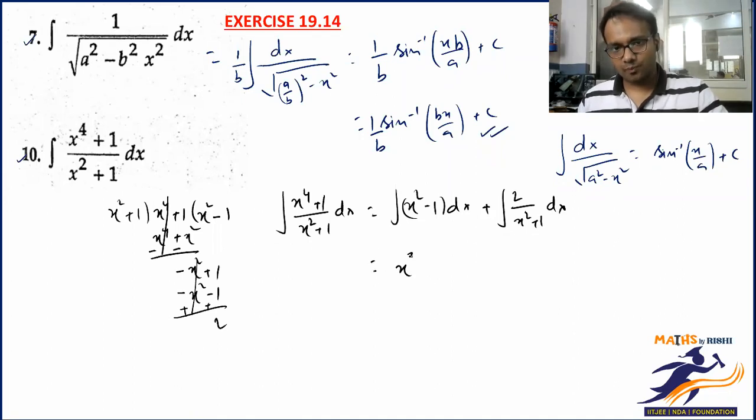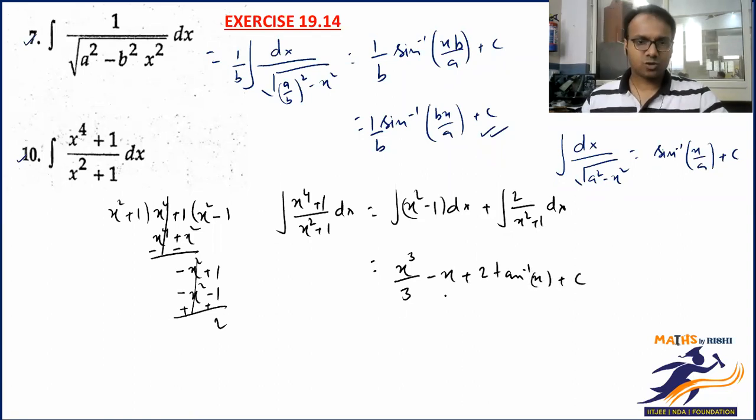x³/3 minus x plus 2tan⁻¹(x) + c. That should be the final answers of questions 7 and 10. Okay?